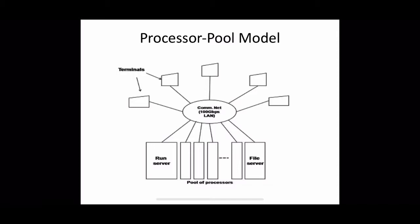The pool of processors consists of a large number of mini-computers and micro-computers attached to a common network. Each processor in the pool has its own memory to load and run system or application programs. There are no direct terminals attached to these processors — users interact with the processor pool using a set of terminals connected to the network.